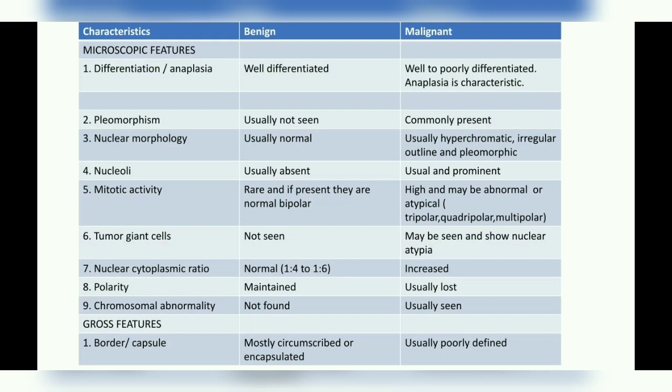Regarding the nuclear-cytoplasmic ratio, for a normal cell it is usually 1:4 or 1:6, and a benign tumor maintains the same ratio. However, in a malignant tumor the nucleus is disproportionately large, changing the ratio — it is no longer 1:4 or 1:6 but can reach up to 1:1.